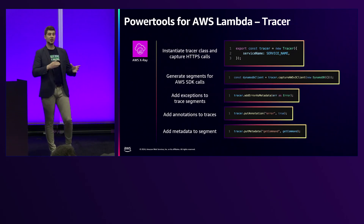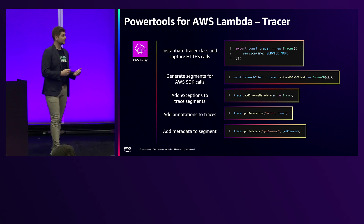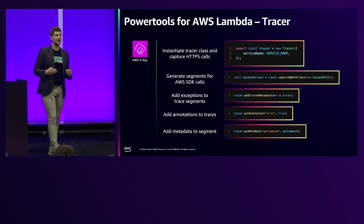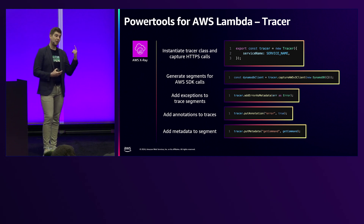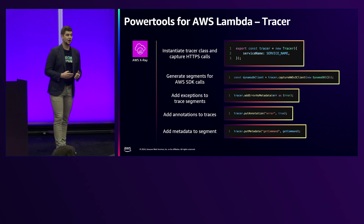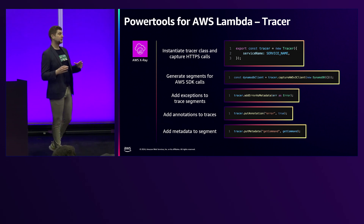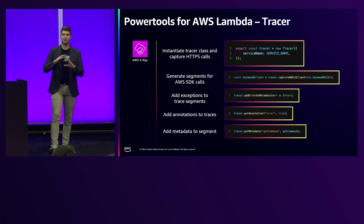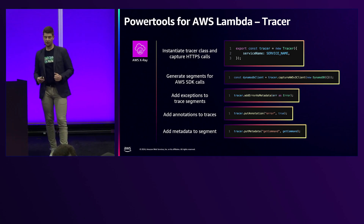We then moved over to X-Ray in our troubleshooting. Once we identified our trace ID, we moved over to X-Ray. If you're just enabling X-Ray on Lambda, you don't get that much information as we had in our example. Power Tools has a nice helper for that — the tracer class, which you can instantiate similar to the metrics class, giving it a service name to correlate your traces. Then whenever you want to do an SDK call, you can capture SDK calls with the tracer class — call the capture_aws_client function and wrap it around your client, so all API calls through the SDK are captured by X-Ray.